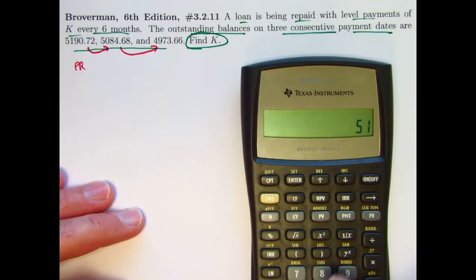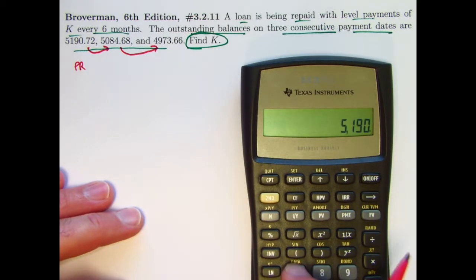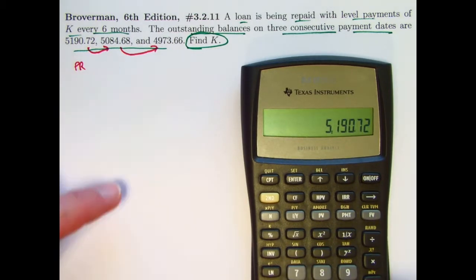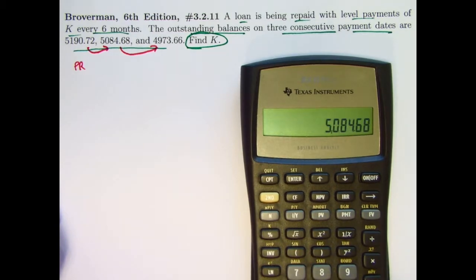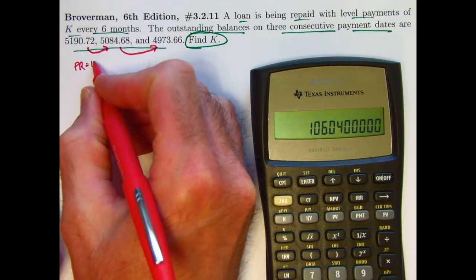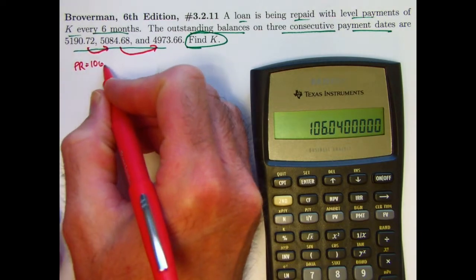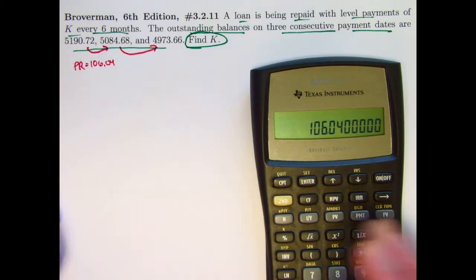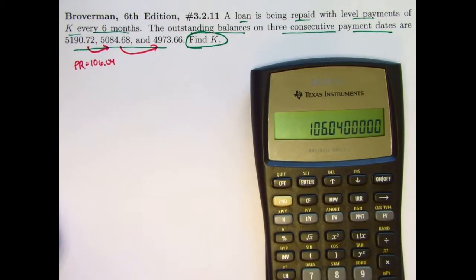So we take 5190.72 and subtract the next balance, 5084.68. The principal reduction from this time to this time is 106.04, and the principal reduction for the next period should be a little bit bigger if it's a typical amortized loan.